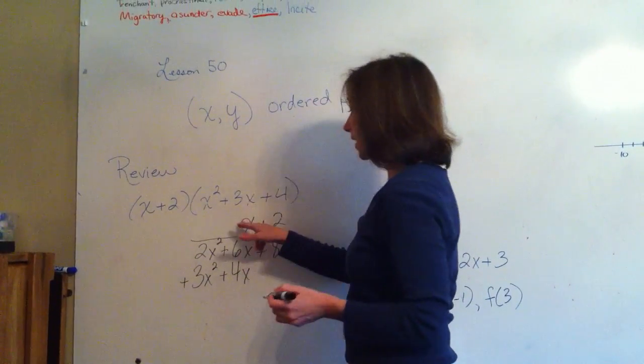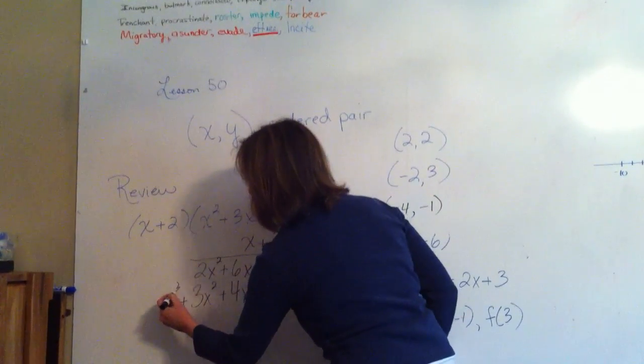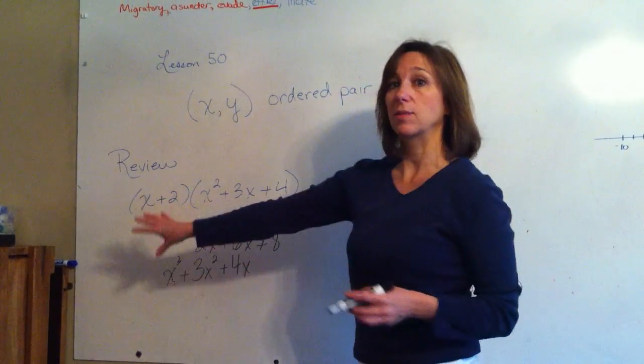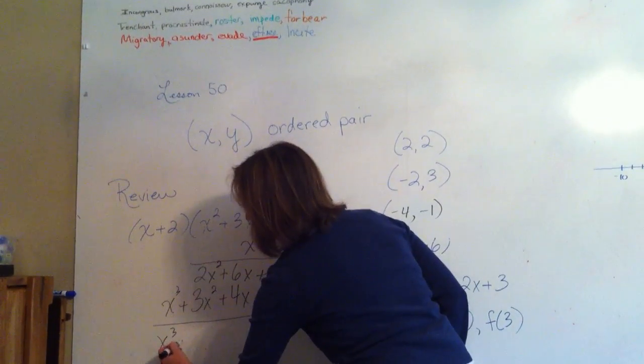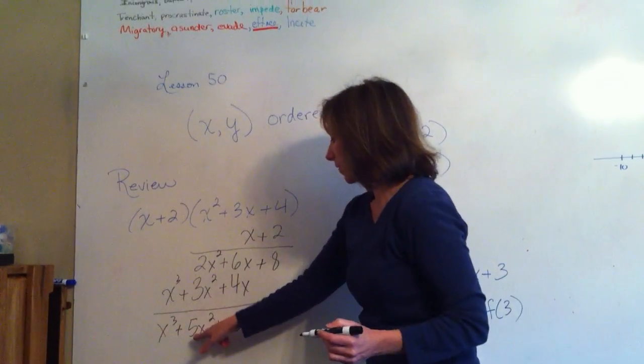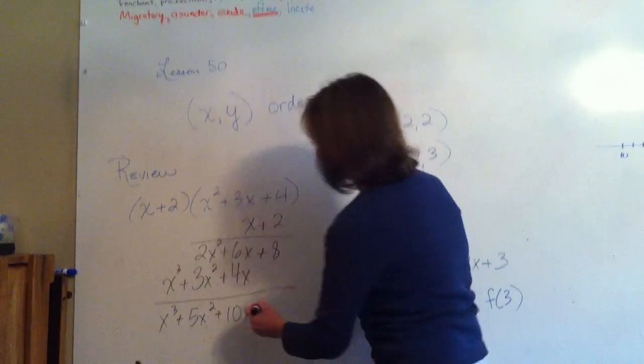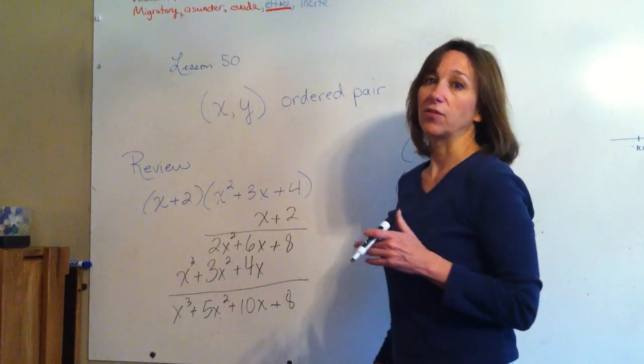x times 3x is 3x squared. It's positive, so put the plus sign. x times x squared is x cubed. There's no one to line that up with, so it gets to be by itself. Draw your line. You can add from either direction because we don't carry. And we get x cubed plus 5x squared plus 10x plus 8. So hopefully that clears up any questions from yesterday.